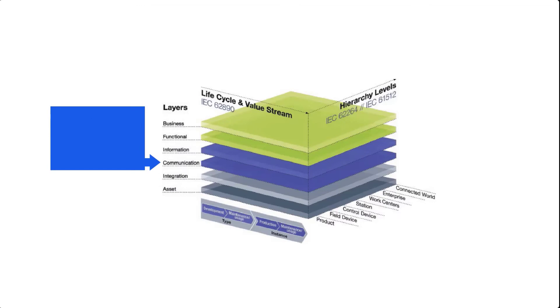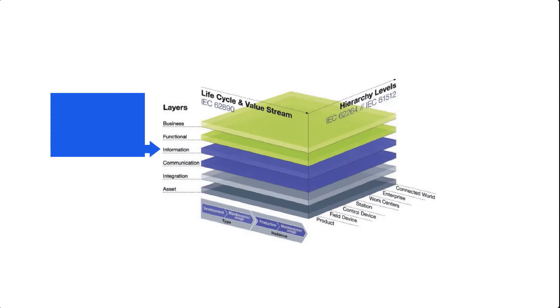Next, we have the communication layer, which is responsible for providing a standardized form of communicating the digital information about the component. It does that by using a common data format and predefined protocols. This layer also provides services to the integration layer. One of the most common standards used in this context is OPC UA. Next, we have the information layer, which is responsible for processing data about the component, persisting the data onto well-defined information models to ensure data integrity and make it available as useful information via a service interface.